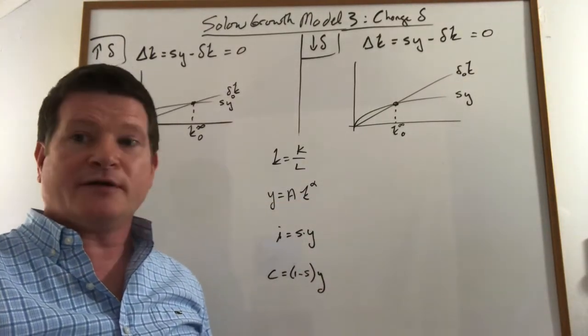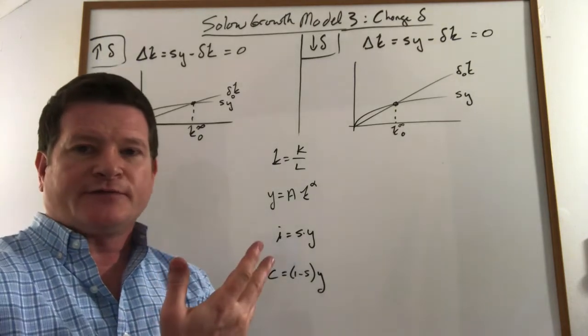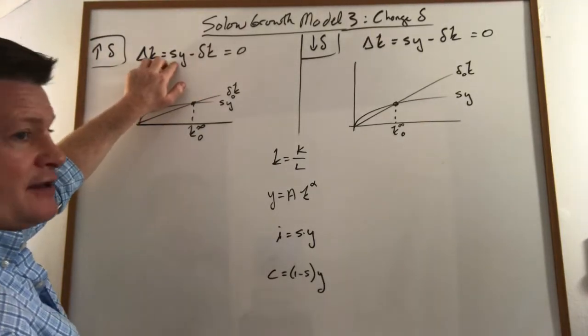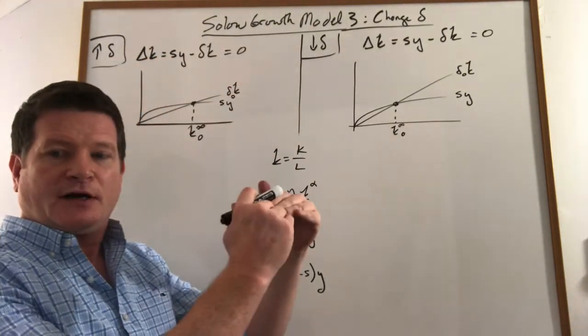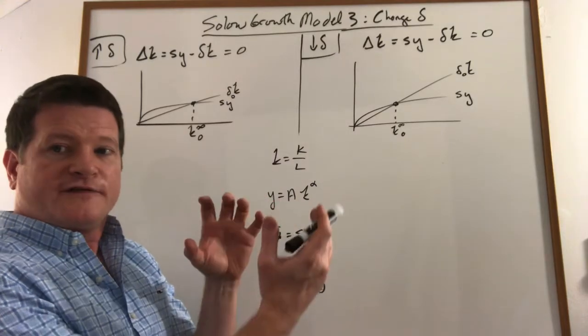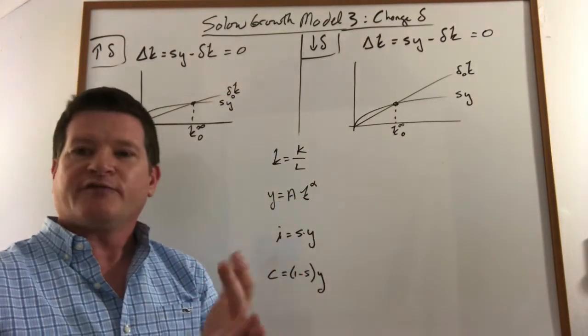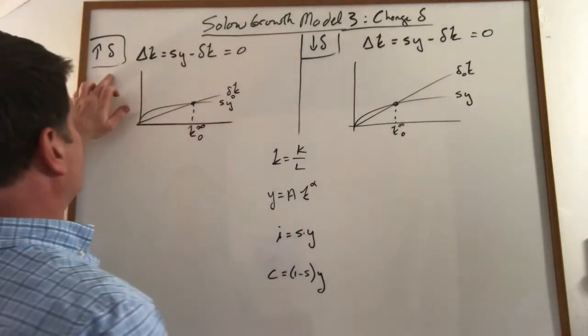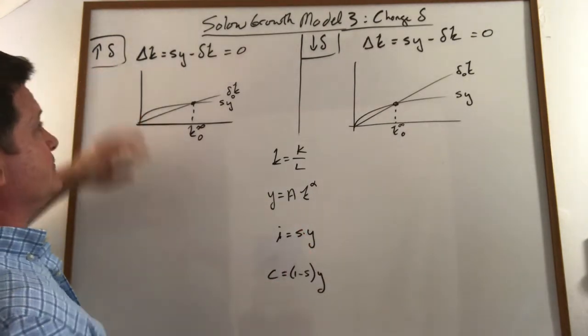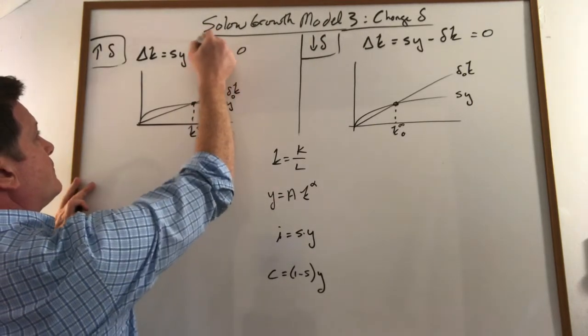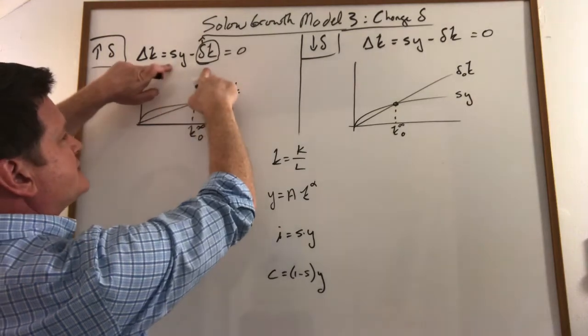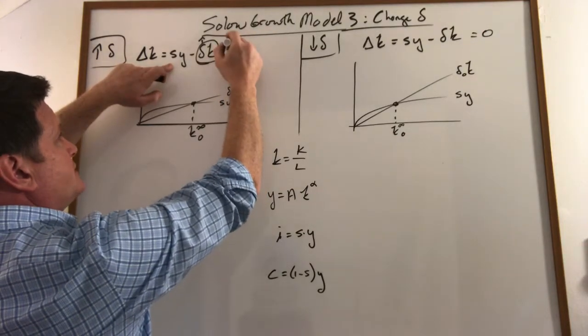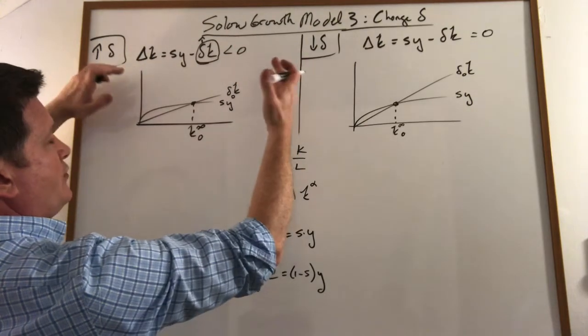The first thing we want to do every time we look at a shock or a change to our system is to use our brains for a second and think through it. What does this mean? If we start in steady state, we were investing exactly the amount needed to keep our capital stock constant. That means we were just investing enough to offset the depreciation. So we were painting our building, fixing it back up, renewing the walls, whatever it meant to just maintain that building so the capital stock stayed constant. If it suddenly starts to depreciate faster, this goes up, which means our old investment is not enough to offset this anymore, and our capital stock is going to turn negative and begin depreciating, the growth in our capital stock.